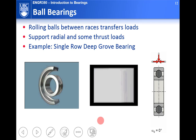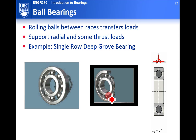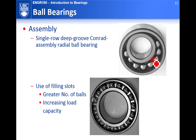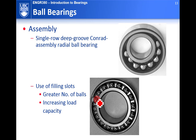There are two different ways of assembling a ball bearing. The Conrad assembly involves moving the inner ring off-center, inserting as many balls as possible, then moving it back to center so the balls are evenly distributed. The other method uses a filling slot cut into the ring, allowing more balls to be inserted, which means it can carry more load. However, the filling slot creates a stress concentration.